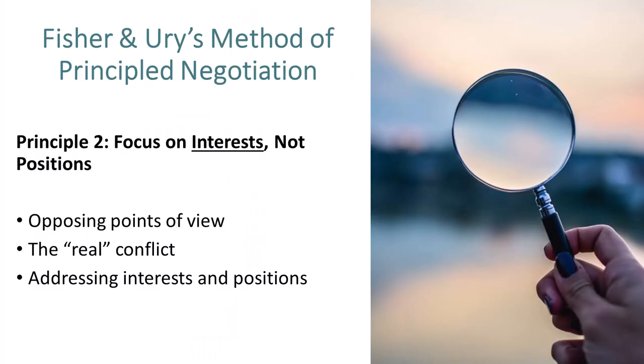Next, focus on interests, not positions. Positions are the opposing points of view in a conflict, while interests refer to the relevant needs and values of the people involved. Another way to think about it is that a position is a public stance, while an interest is the reason why that person takes that position. If you focus on positions, you and the other person might not see that there is room for agreement and there are multiple ways to meet the underlying interest. Addressing both interests and positions helps make negotiation more authentic and move forward to problem solving.